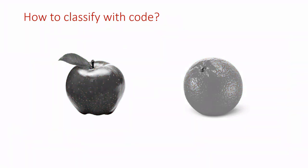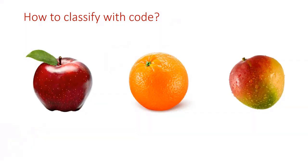What if you have black and white images? The color-based approach won't work. So what could you do in this case? We can check its shape. If its shape is a sphere, then it's an orange. Otherwise, it's an apple. But what if a third item exists? A mango also has a sphere shape, and it has both red and orange pixels. We can still find a solution, but it becomes more and more complex with rule-based approaches.